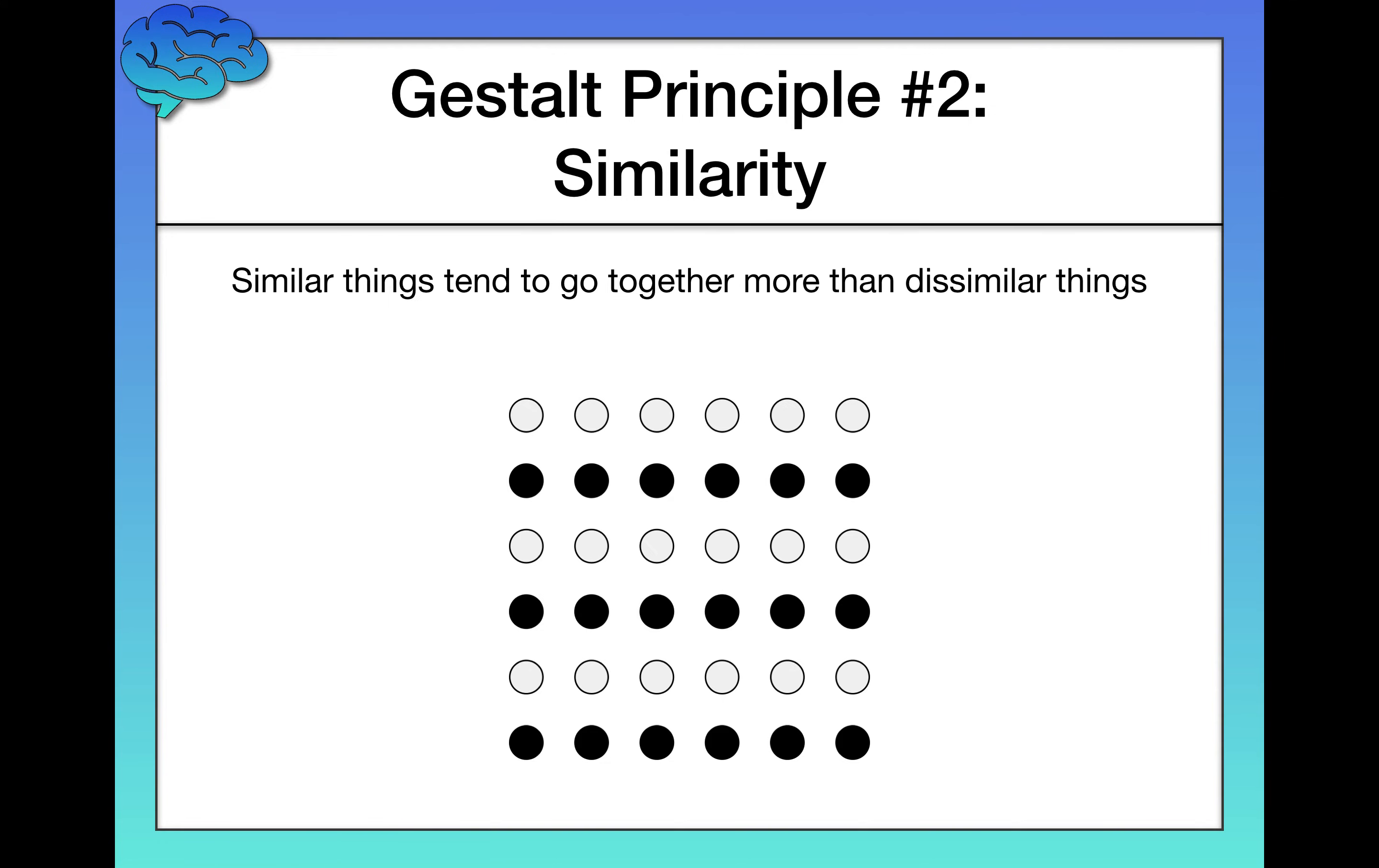Next, we have the principle of similarity. This is the principle which states, again, it's a principle that describes the ways in which our brains work. So this isn't people just coming up with this. These are biases that we have in the ways we as humans perceive things.